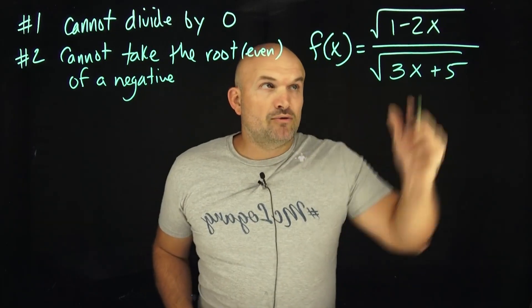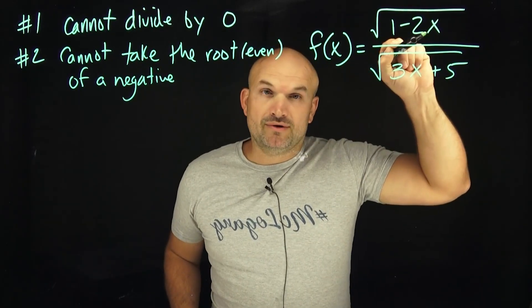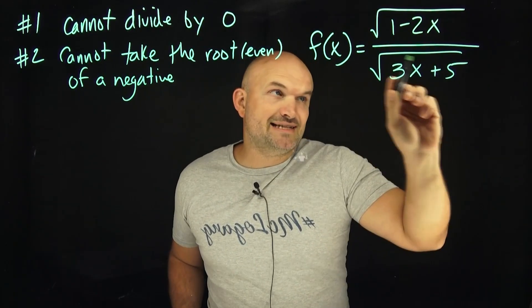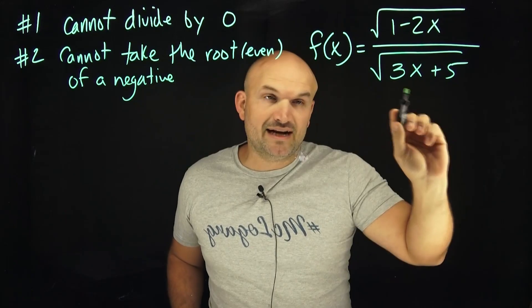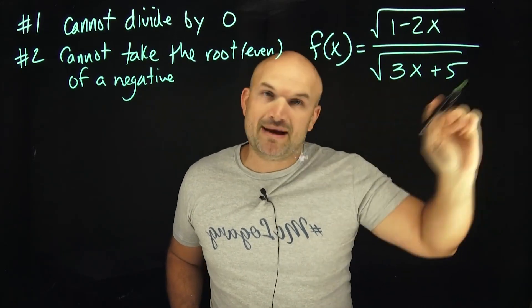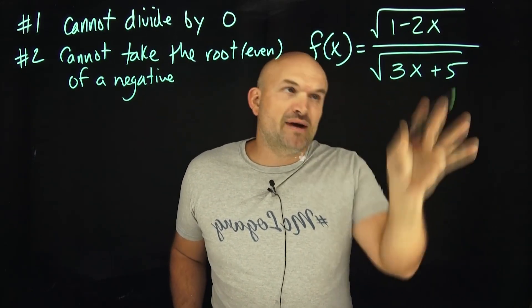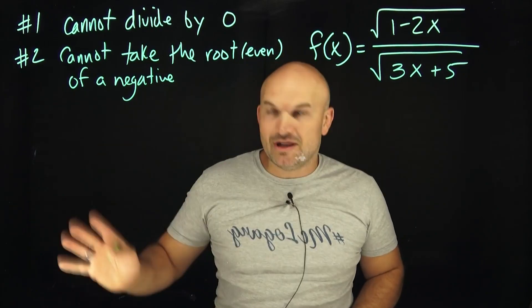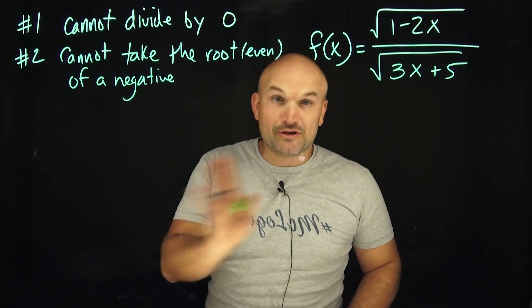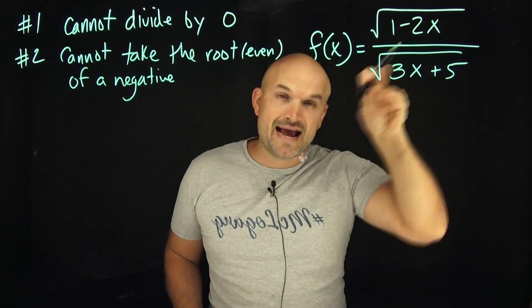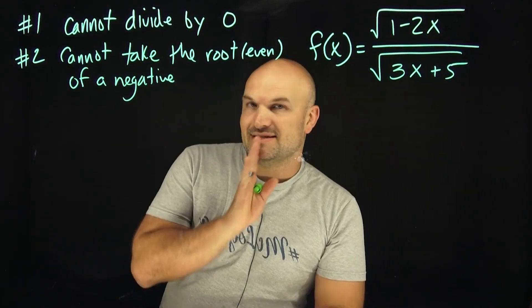If you look at this, you could say: I have one square root — can't take the square root of anything negative here, can't take the square root of anything negative here, and I can't divide by anything zero. Whatever's in my denominator also cannot equal zero. If you're following along with me, there are actually three restrictions: two radicals and one denominator.